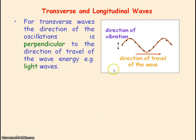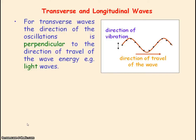For a transverse wave, the direction of the oscillations or vibrations is perpendicular — 90 degrees — to the direction of travel of the wave energy. Examples of transverse waves would be electromagnetic waves, such as light, radio waves, and microwaves.